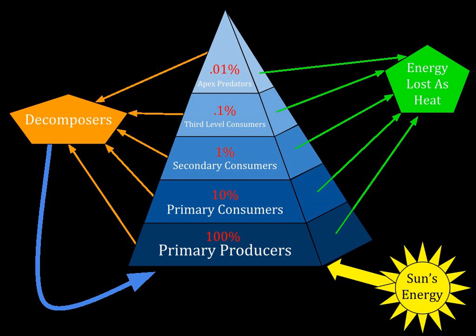The disadvantages of the pyramid of productivity as a representation: the rate of biomass production of an organism is required, which involves measuring growth and reproduction through time. There is still the difficulty of assigning organisms to a specific trophic level, as well as the problem of assigning decomposers and detritivores to a particular trophic level. Nonetheless, productivity pyramids usually provide more insight into an ecological community when the necessary information is available.